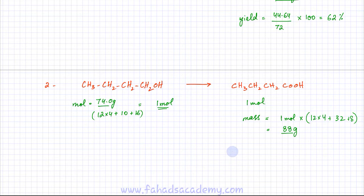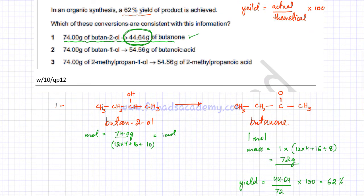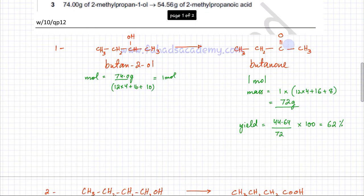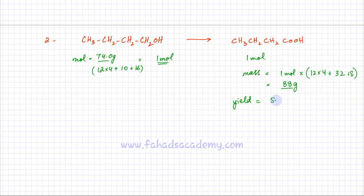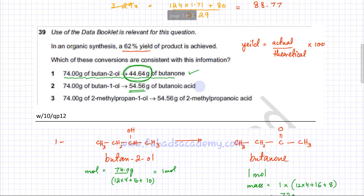To calculate yield for option 2: yield = actual ÷ theoretical × 100. The actual mass given is 54.56 grams. So yield = 54.56 ÷ 88 × 100, which is exactly equal to 62%. Option 2 is also correct, with a yield of 62%.